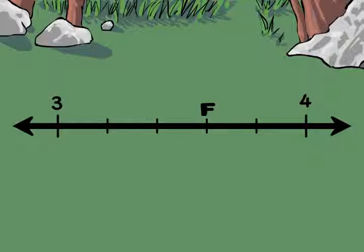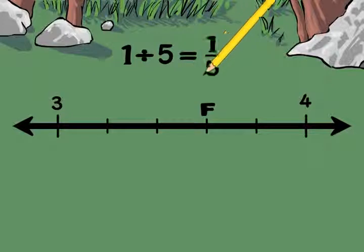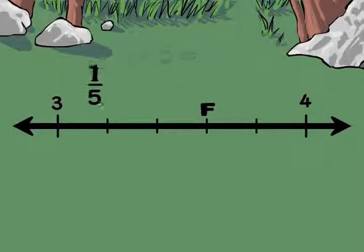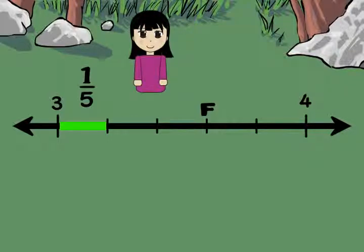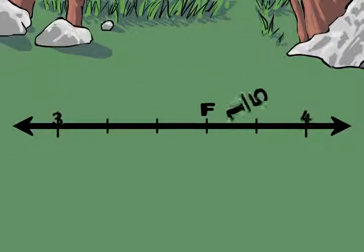Step two. Count the segments and find each length. Hmm. One, two, three, four, five. One divided by five is one-fifth. So each segment represents one-fifth. See? That's what I said, it's fractions.